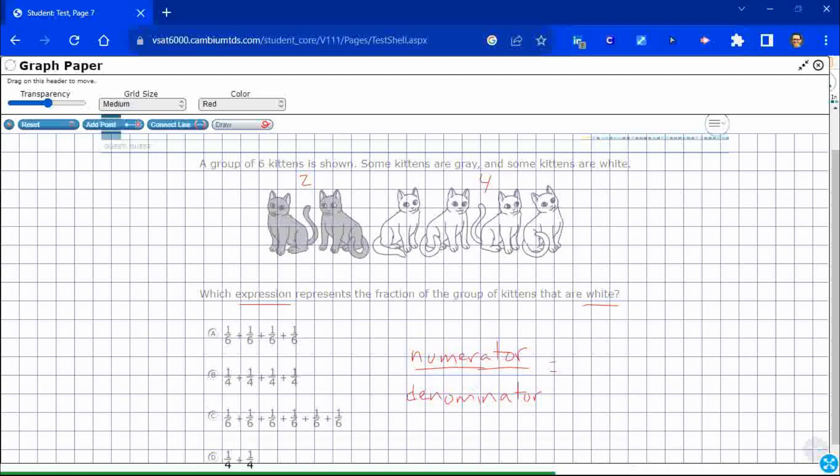So the numerator is the number of the type you're choosing. In this particular problem, we're looking at the number of white, since it says in the question itself, we need to find an expression that represents the fraction of kittens that are white. So you're looking for a part.